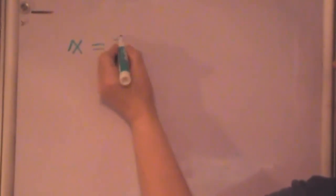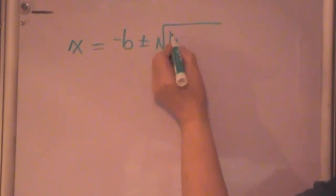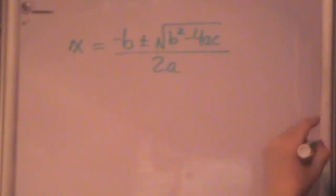X is equal to minus b plus or minus the square root of b² minus 4 times a times c all over 2a. Well, where am I getting these a's, b's, and c's? Well, they come out of that standard form.